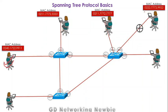Now consider the same source and destination, but suppose the link between the destination node and its connected switch has been broken — for example, someone cut the cable. Because of this, the switch doesn't have an entry for that destination, and neither does the other switch.